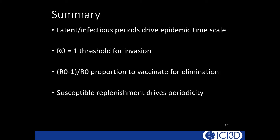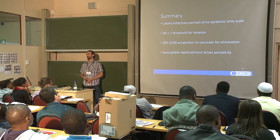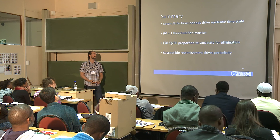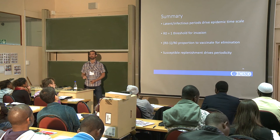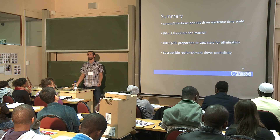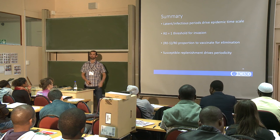In summary: latent and infectious periods drive epidemic timescales and control difficulty. R0 is the threshold parameter — above one, epidemics take off; below one, they don't. The vaccination threshold is (R0 − 1)/R0. Susceptible replenishment through births, loss of immunity, or immigration drives periodicity in epidemics.